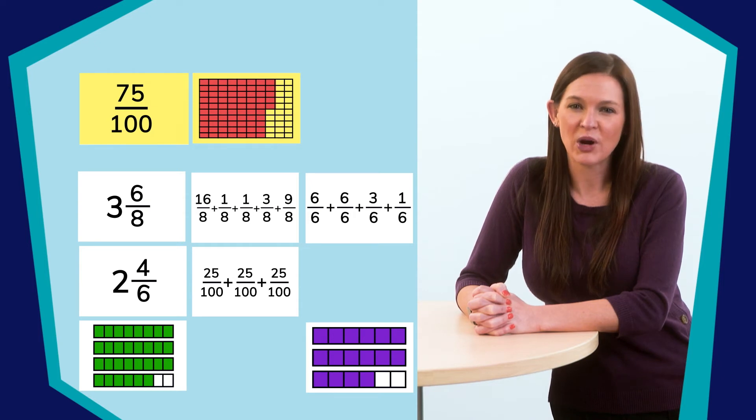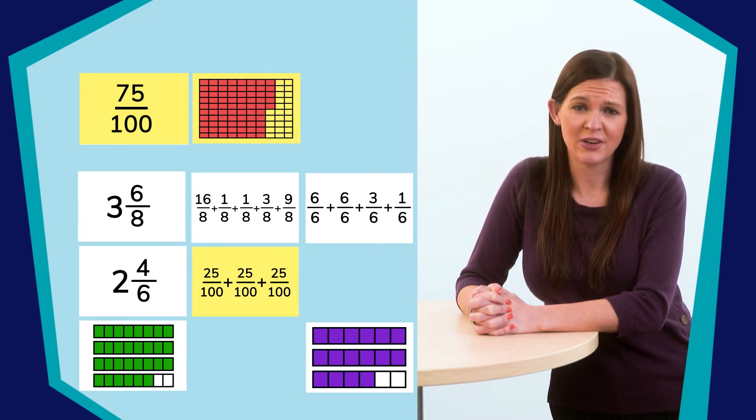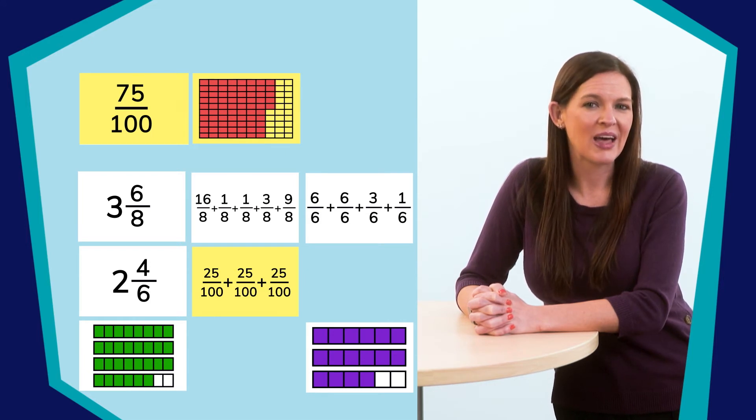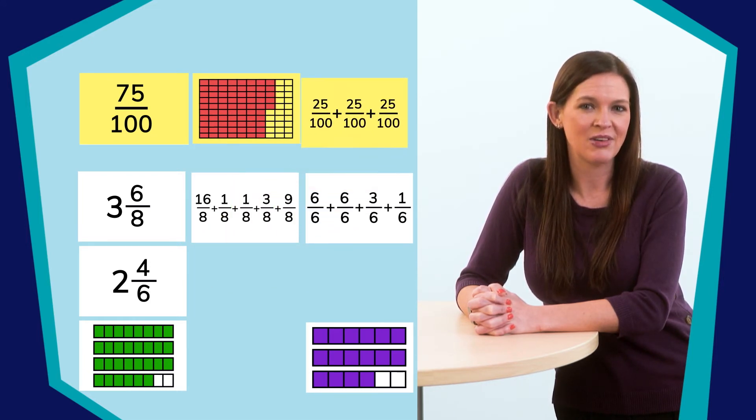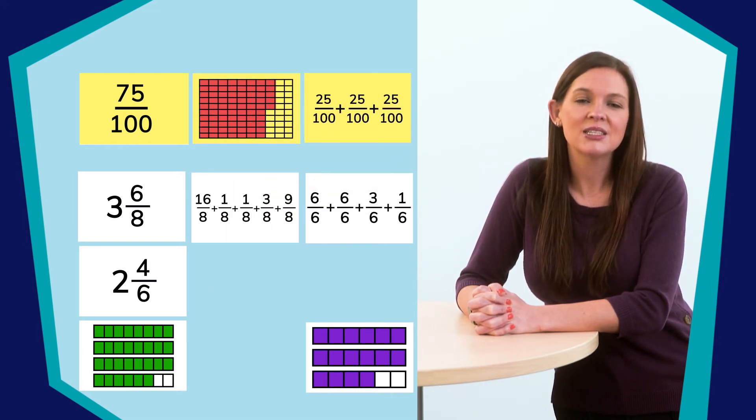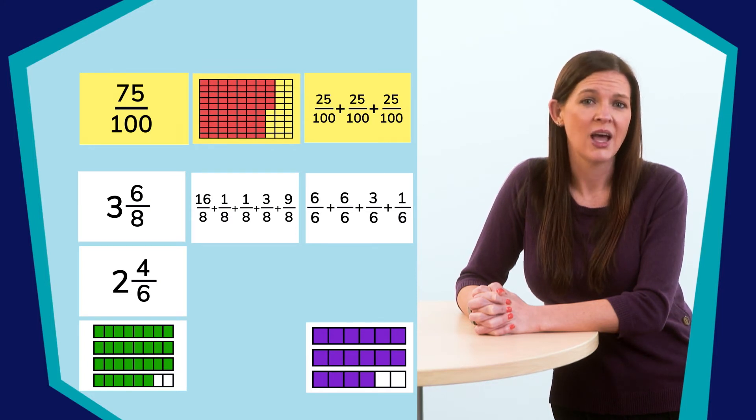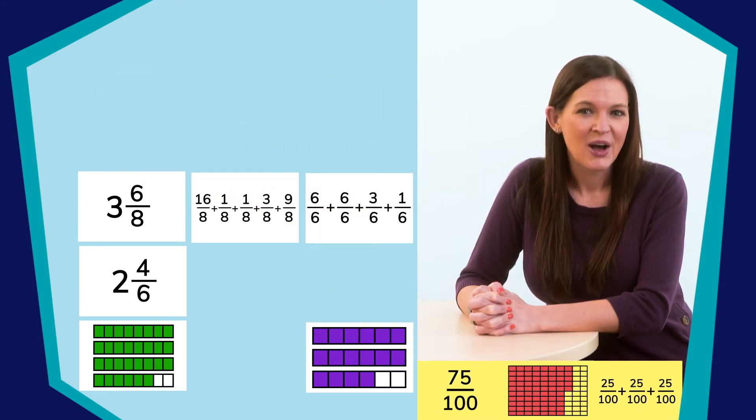Now, which expression shows 75 one-hundredths? I agree. This expression has 25 hundredths plus 25 hundredths plus 25 hundredths. And when that is totaled, it adds up to 75 hundredths. This expression decomposed 75 hundredths into three equal pieces and didn't use any unit fractions. That's pretty cool, actually.